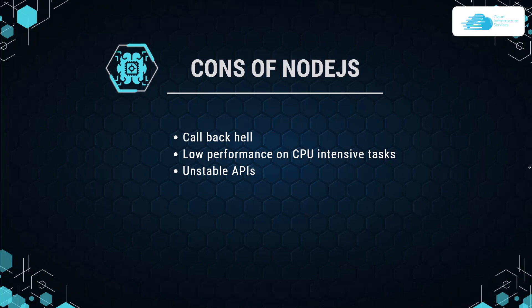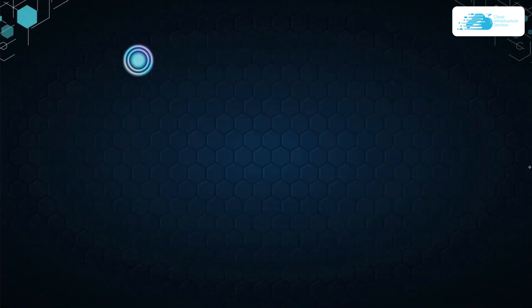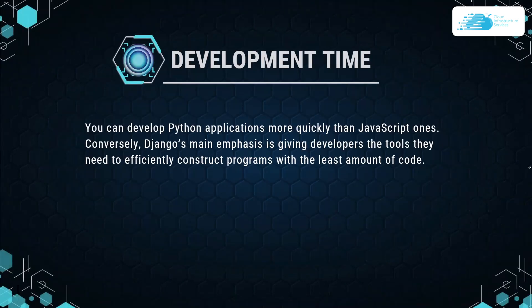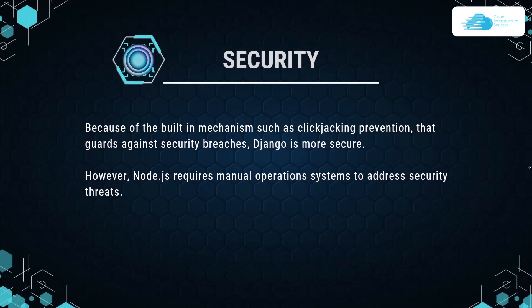Now let's talk about the key differences between Django and Node.js. The first comparison is development time. You can develop Python applications more quickly than JavaScript ones. Django's main emphasis is giving developers the tools they need to efficiently construct programs with the least amount of code, so Django takes the upper hand here. On security, due to built-in mechanisms such as click-jacking prevention, Django is more secure, whereas Node.js requires manual operation systems to address security threats.